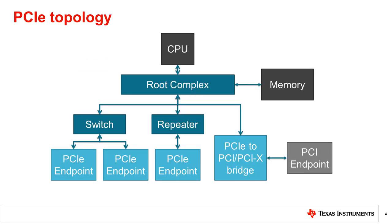PCIe communication is hierarchical, meaning there is a single source through which all the data passes, which is the root complex. The information passes to the root complex from multiple PCIe endpoints. Let's examine in detail how PCIe initializes and communicates over a typical link such as the one highlighted here.